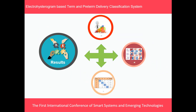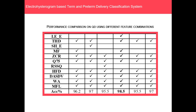Moving towards the results, we used 25% holdout validation to achieve the best results. The results are shown in the form of a performance comparison on QDA using different feature combinations, and 98.5% accuracy — the best result for preterm classification — was obtained using the features described earlier.